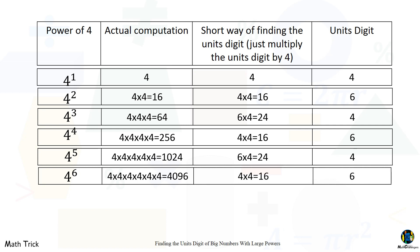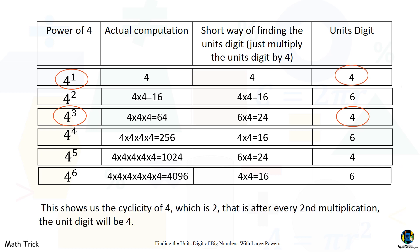Notice that when four is multiplied by itself each time, the last digit changes. On the third multiplication, four raised to the third power has the same unit's digit as four raised to one. This shows us the cyclicity of four, which is two — that is, after every second multiplication, the unit's digit will be four. The cyclicity of any number is about how the last digit appears in a certain defined pattern.